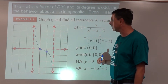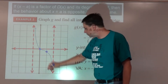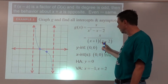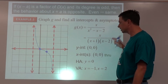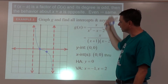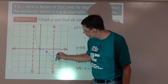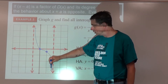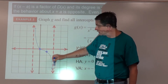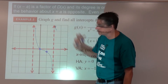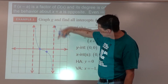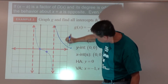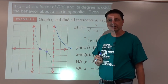Looking at the asymptote at x equals 2, which came from the factor (x minus 2) to the first power — that's odd, so behavior is opposite. On the left side of that asymptote the function approached from low, so on the right side we want to be high — coming down to get close to our horizontal asymptote at y equals 0.